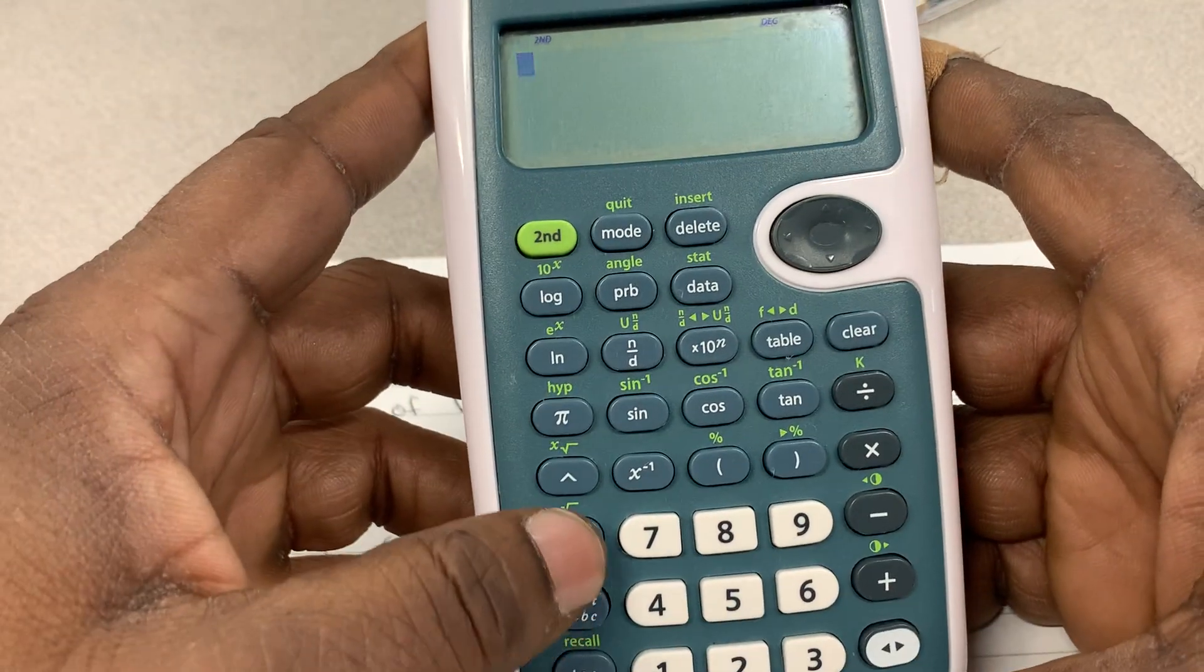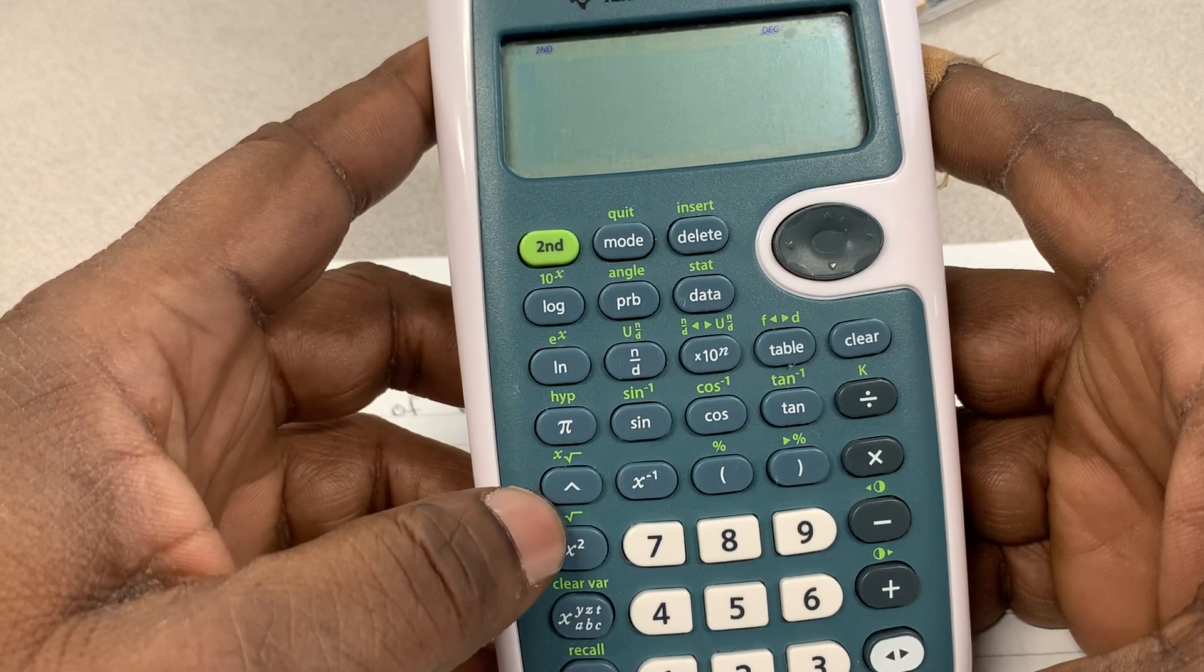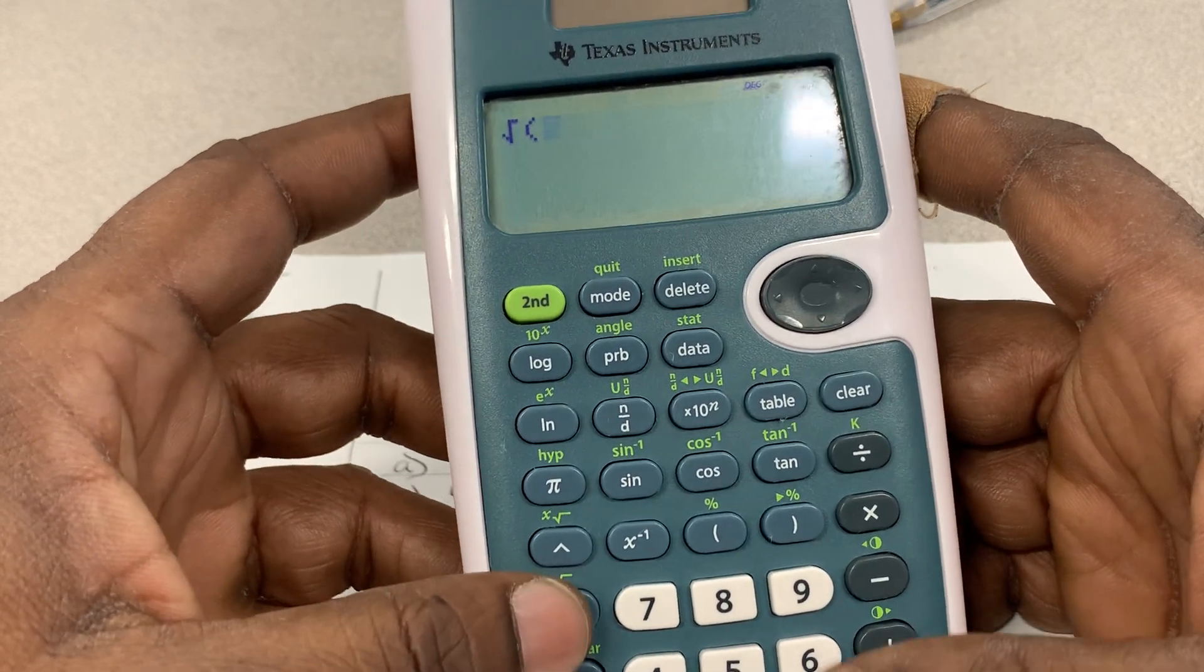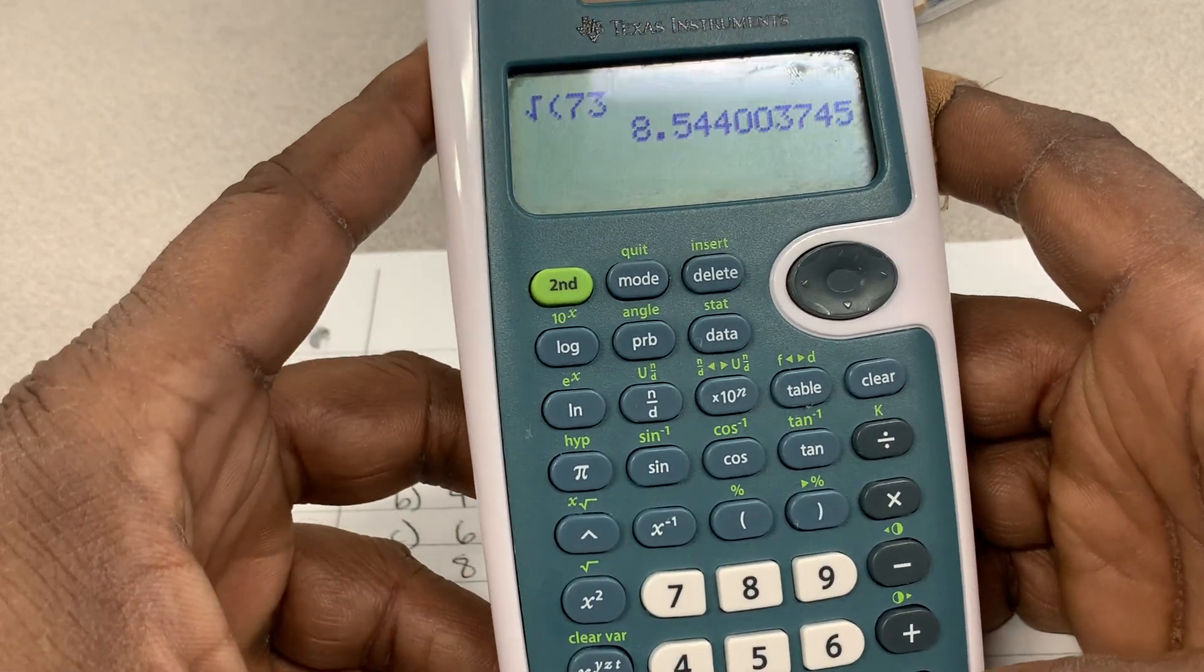So, as you can see this calculator right here, I would just press second and then press this X to the second, which is going to activate this green button, which is square root. Once I write 73 in there and I press enter,